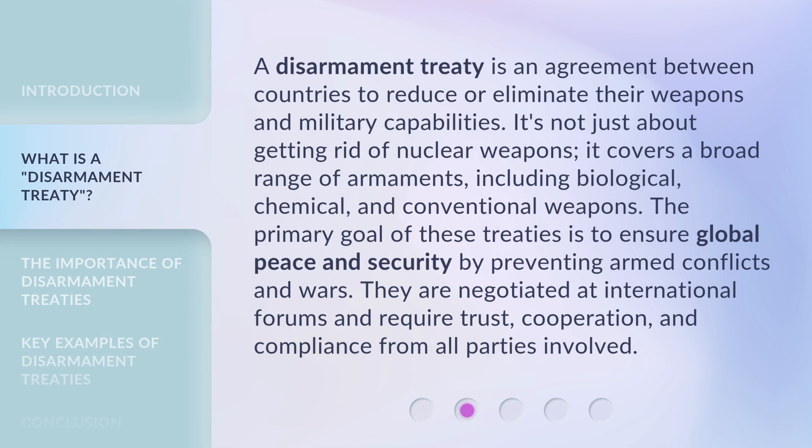A disarmament treaty is an agreement between countries to reduce or eliminate their weapons and military capabilities. It's not just about getting rid of nuclear weapons — it covers a broad range of armaments, including biological, chemical, and conventional weapons. The primary goal of these treaties is to ensure global peace and security by preventing armed conflicts and wars. They are negotiated at international forums and require trust, cooperation, and compliance from all parties involved.